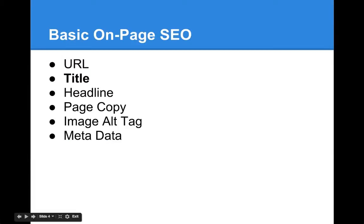Basic on-page SEO implies that you use your keyword in the URL, title, headline, page copy, image alt tag, and metadata of your site.